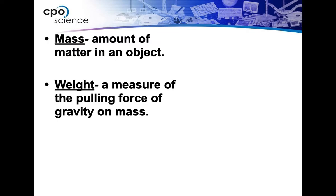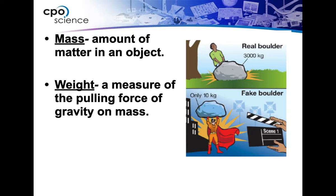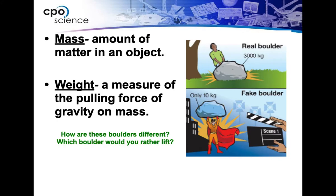Mass is how much matter is inside of an object — we measure that in grams. Weight, remember, is a force: a measure of the pulling force of gravity on mass. Weight changes when we go to the moon because you don't have that stronger gravitational pull, so you weigh less. Make sure we know the difference: mass is how much matter is inside an object; weight is a measure of the pulling force of gravity on mass.